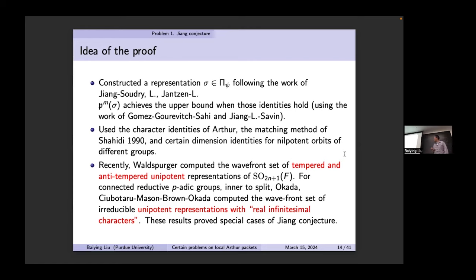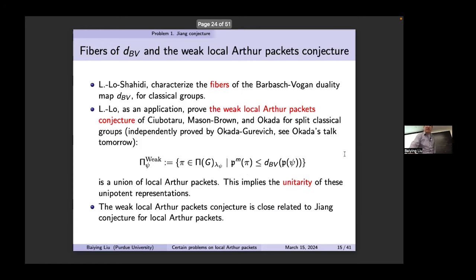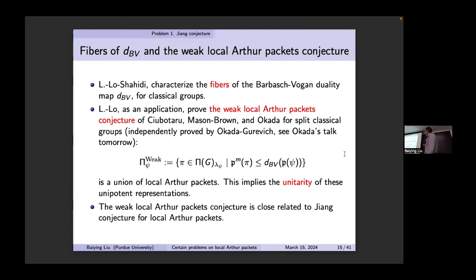This is our attempt towards Johnson's conjecture. Later I will introduce another way — a reduction of Johnson's conjecture. Notice that in the formulation of Johnson's conjecture there is the DBV partial Barbasch-Vogan duality, a mapping of nilpotent orbits of the dual group to the group itself. Recently the fiber of these maps was computed explicitly for classical groups; they are very important towards Johnson's conjecture and have another application towards what is called the weak local Arthur conductor conjecture of Sutherland-Moss and Brown-Okada for split classical groups.